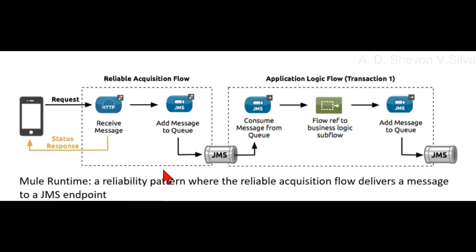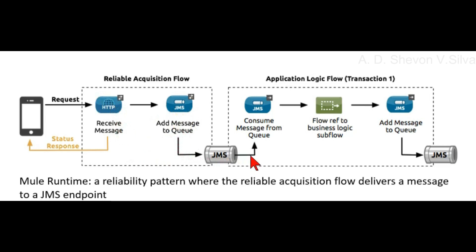In the flow diagram, the client receives a message via request, and a status response is sent back to the client. The receive message step adds the message to the queue in the reliable acquisition flow. From there, it goes to JMS, which is connected to consume the message from the queue.